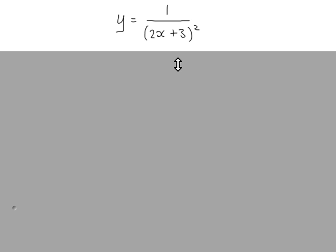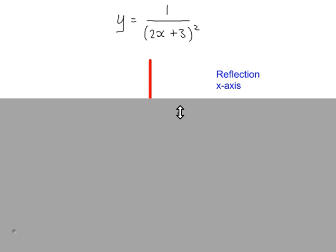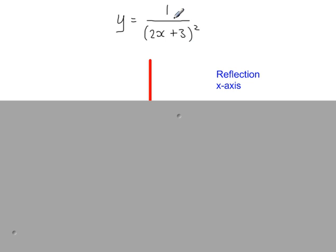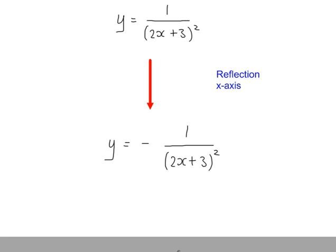The third transformation is a reflection in the x axis. When you reflect in the x axis, you're changing the signs on one side of the equation. So we just need to put a minus here to get this.